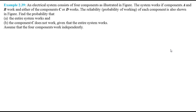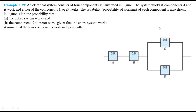In this video we will solve some problems on conditional probability and the multiplication laws of probabilities, taken from the book 'Probability and Statistics for Engineers and Scientists' by Walpole, 9th edition. We take example 2.39: an electrical system consists of four components as illustrated in the figure. The system works only if component A works, component B works, and component C or D works. The probability of working of each component is mentioned in the diagram. The four components work independently.